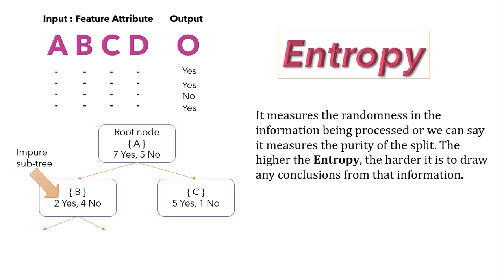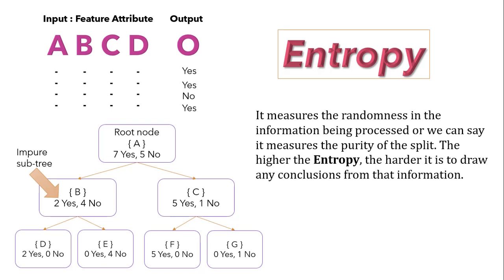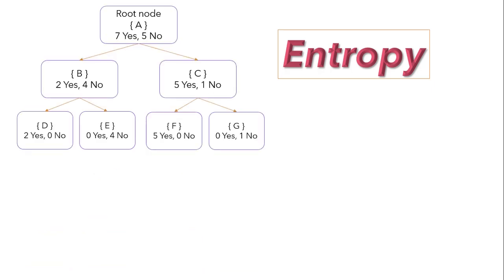Node D will be 2 yes 0 no, and node E will be 0 yes 4 no. Same we will do for node C. Here you can see that this can be categorized as pure subtree as at this layer we have either yes or no component with us. For finding out the best split with pure subtree, we need entropy function.